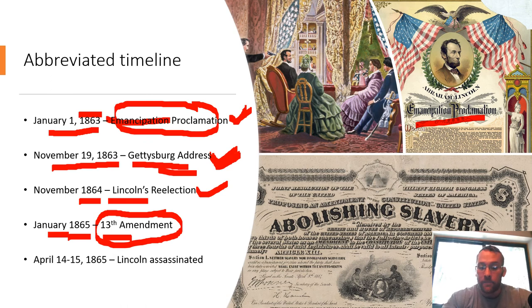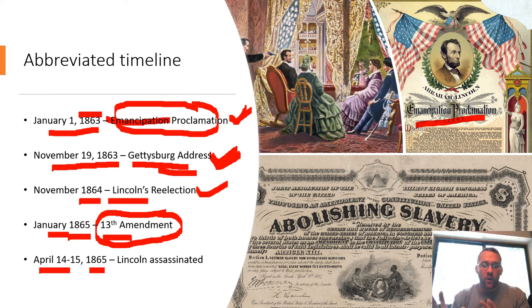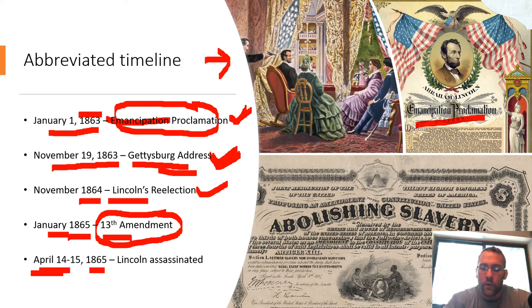On April 7th of 1865, General Lee of the South surrenders to General Grant of the North at Appomattox. At this point the war is sort of de facto over. A week later, on April 14th, Lincoln is assassinated by a man named John Wilkes Booth — I'm sure you've heard of him from fourth grade social studies. John Wilkes Booth was a Southern sympathizer, one of those 'South will rise again' types.